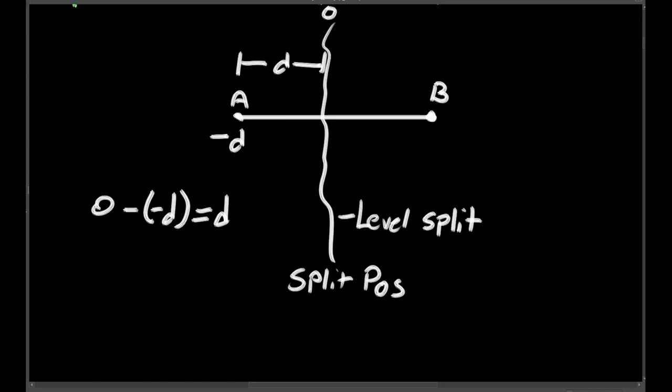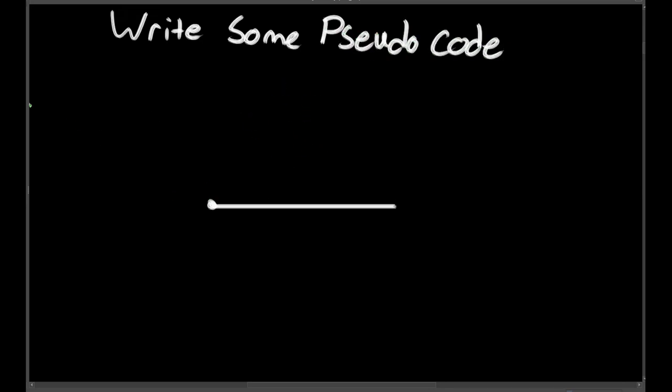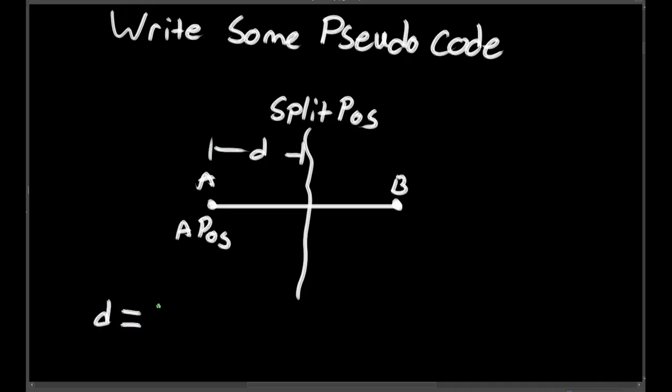Now we want to walk through that same example again, except this time we'll write very simple pseudocode for each step in the process. At this early stage, I keep the pseudocode really simple and try to avoid anything like loops. For our example, we take the position of the level split and subtract the position of the vertex we want to move. Then we add that result to the position of the vertex.